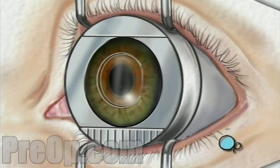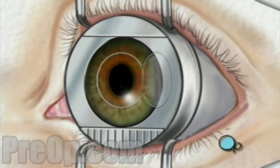Underneath this flap, the inner layer of the cornea, called the stroma, is exposed.